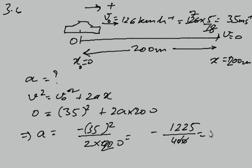So this gives -1225/400 = -3.0625, or you can say minus 3.06 meters per second squared. This is the acceleration.